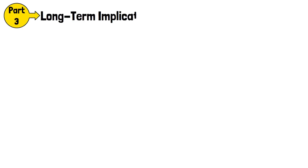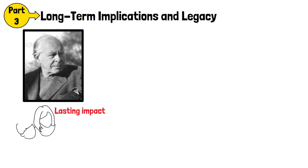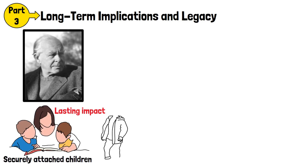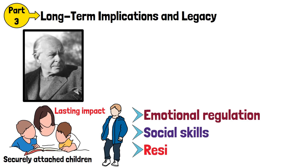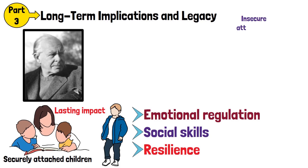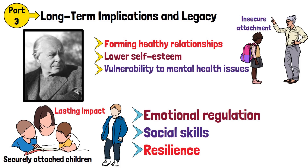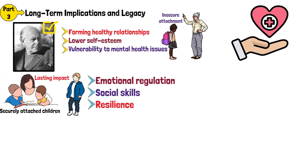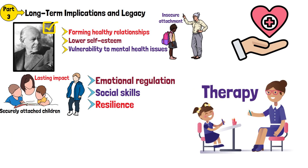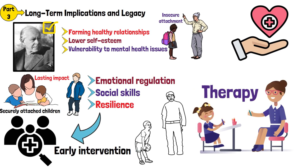Part 3 – Long-Term Implications and Legacy. Bowlby's theory highlighted the lasting impact of early attachments. Securely attached children tend to exhibit better emotional regulation, social skills, and resilience. In contrast, insecure attachments are linked to difficulties in forming healthy relationships, lower self-esteem, and vulnerability to mental health issues. Bowlby's work laid the foundation for interventions such as therapy focused on repairing attachment wounds, and emphasised the importance of early intervention and stable caregiving environments.